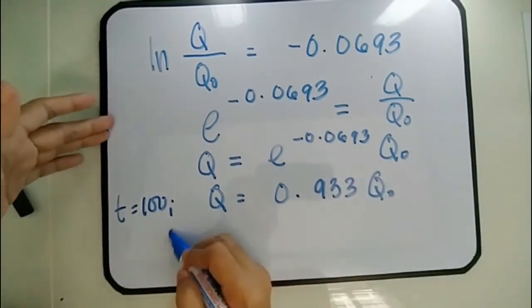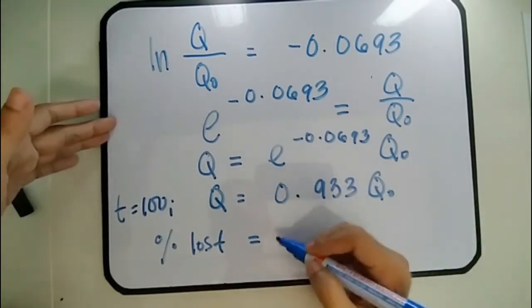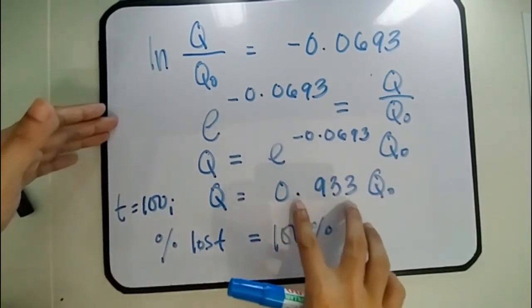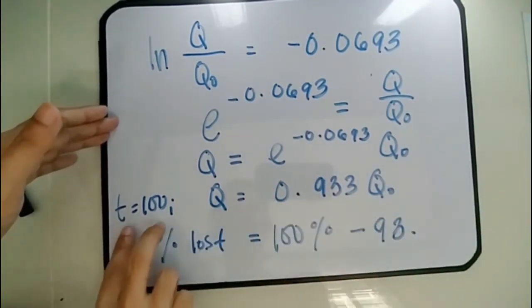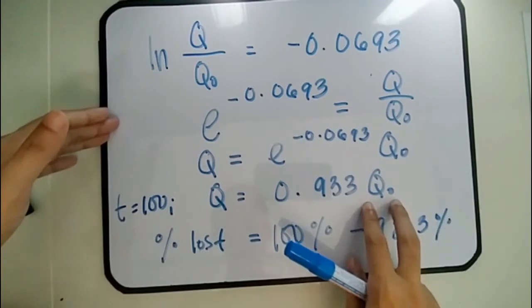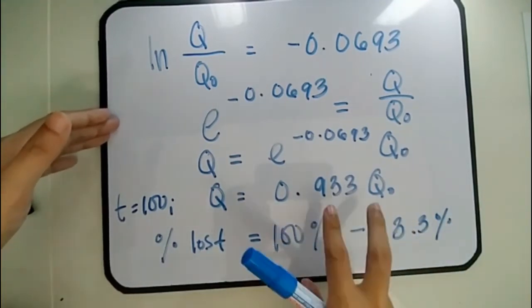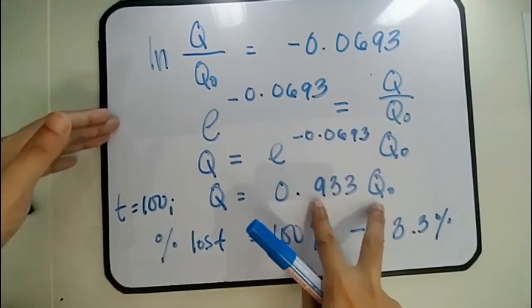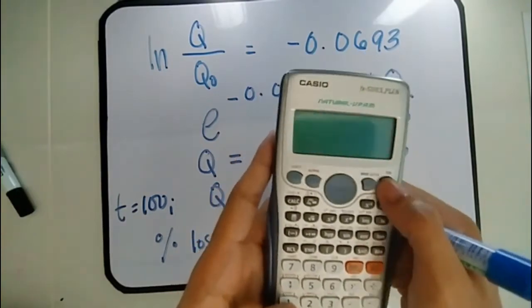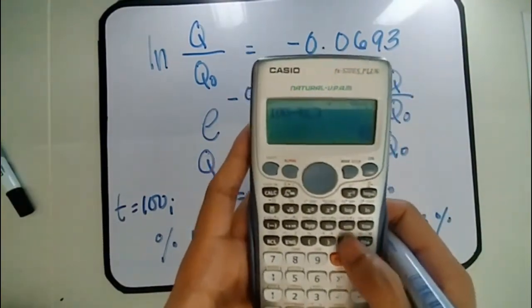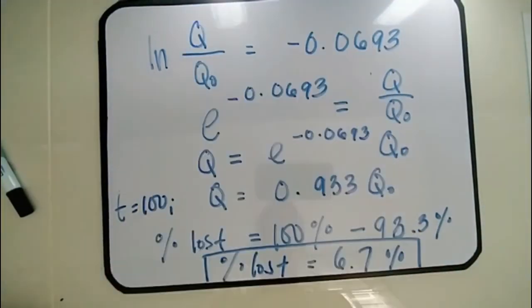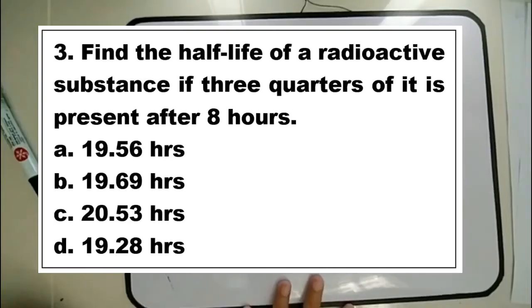Therefore, the percentage loss equals 100% minus 93.3% — that is, the original minus the percentage remaining at T = 100 years. Percentage loss = 100 − 93.3 = 6.7%.